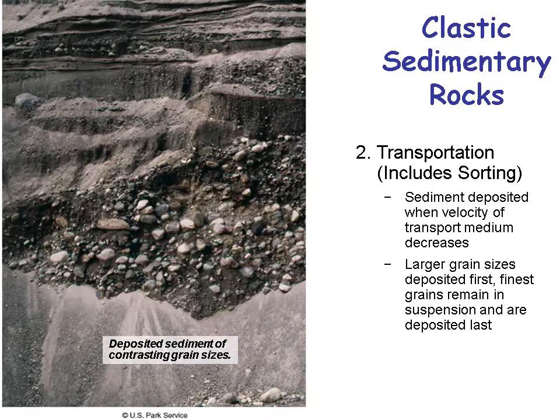The transportation stage includes sorting. The faster the stream, the bigger the grain it'll carry. Sediment is deposited when the velocity of the transport medium decreases. As a flood stops or slows down, it dumps the gravel where you see it. A general rule is that larger grain sizes are deposited first because as the water slows down, it can't carry them. Then as it slows further, it dumps smaller and smaller material, so the very top layer is very fine.